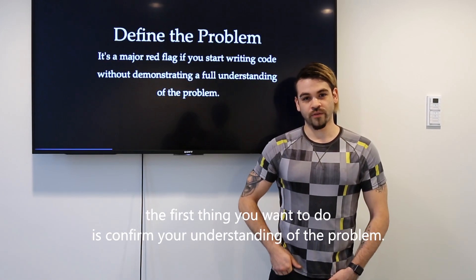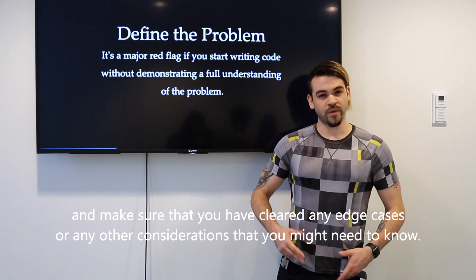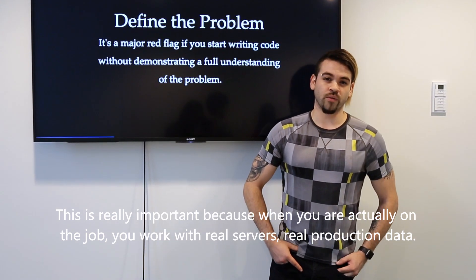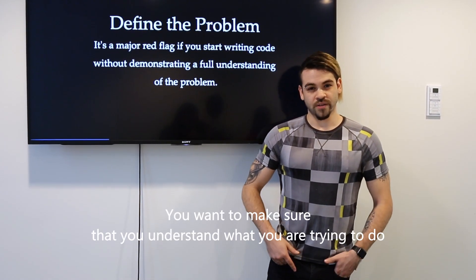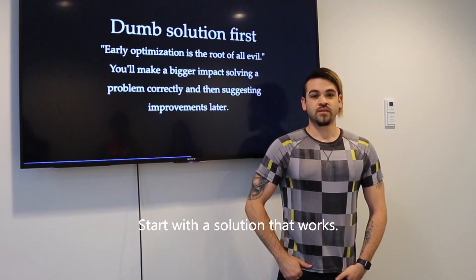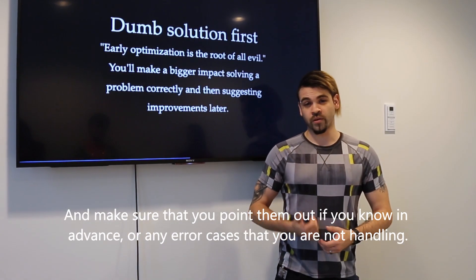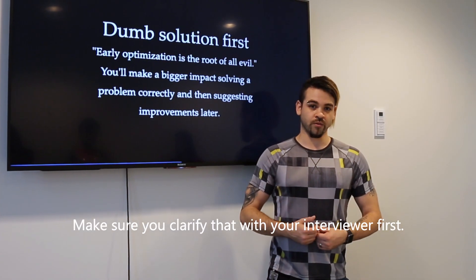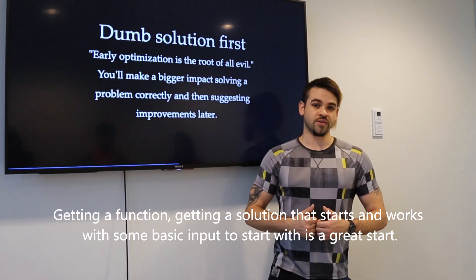When your interviewer asks you a technical question, the first thing you'll want to do is confirm your understanding of the problem. Make sure you've clarified any assumptions and cleared up edge cases. This is really important because when you're on the job, you're working with real servers, real production data, and potentially thousands or millions of customers. Start with a solution that works — just get something that works start to finish. Point out any error cases you're not handling, and clarify that with your interviewer first. Getting a solution that works with some basic input is a great start, and you can iterate from there.